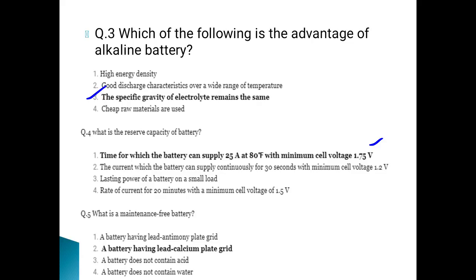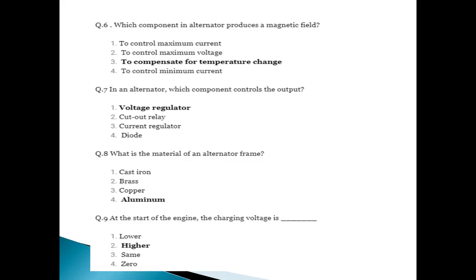A maintenance-free battery has a lead-cadmium plate grid. The alternator produces a magnetic field. The voltage regulator functions to control maximum voltage, compensate for temperature change, and control minimum current.